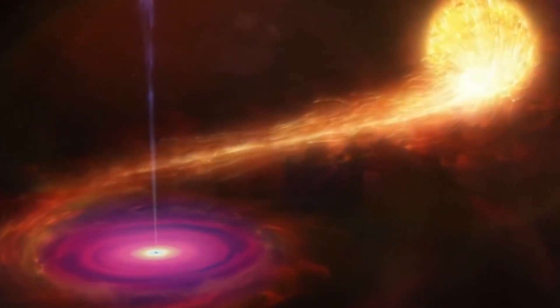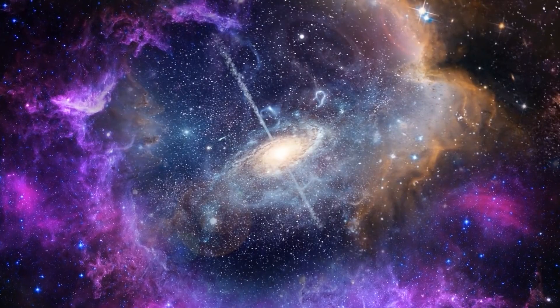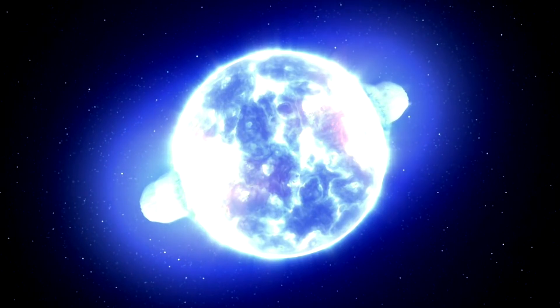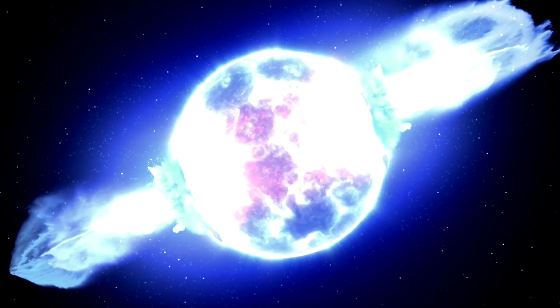After shedding its outer layers, the star sends forth two beams of light so intense that they can be seen from billions of light years away. During these brief gamma ray bursts, more energy is released than the Sun can produce in a billion years.